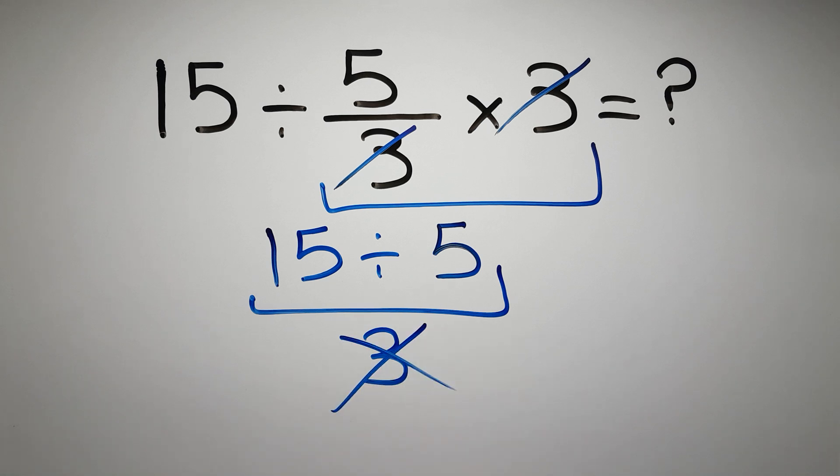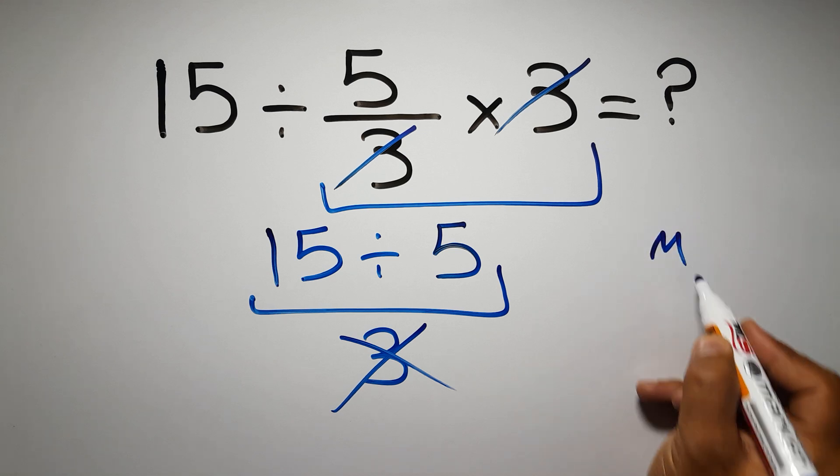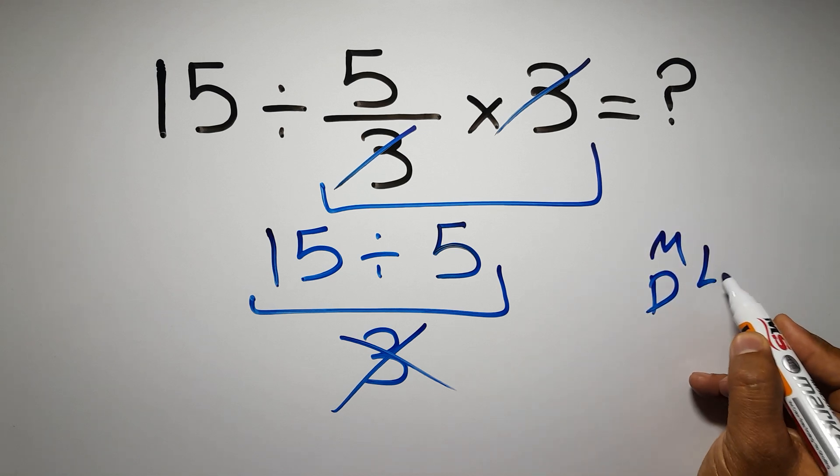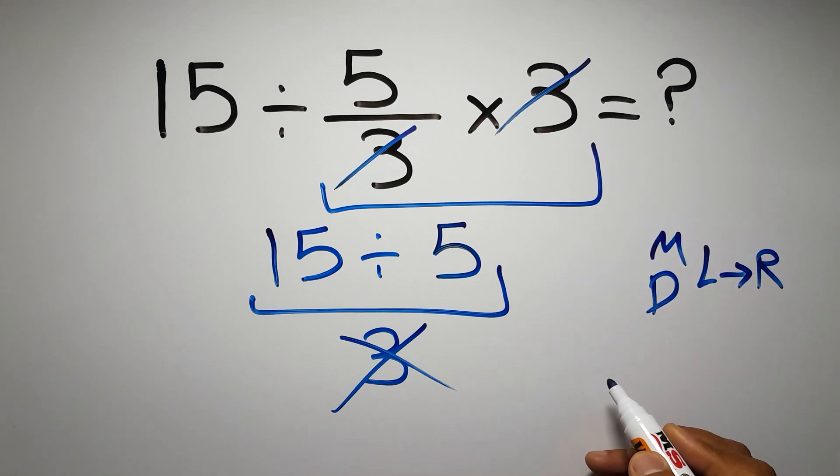Because according to the order of operations, multiplication and division have equal priority and we have to go from left to right. So here first we have to do this division, then this multiplication. If we do this multiplication before this division, it is wrong.